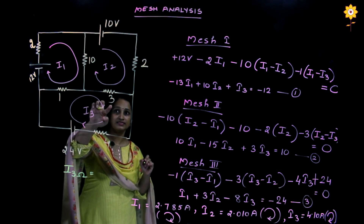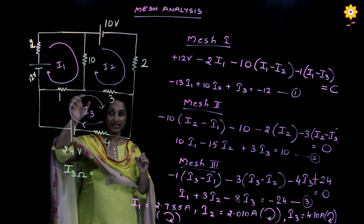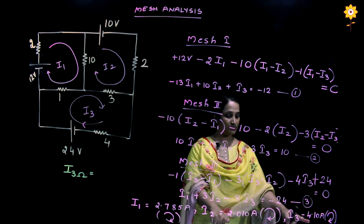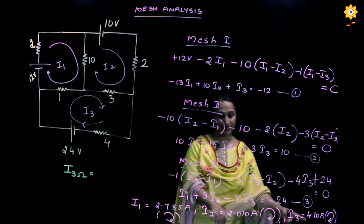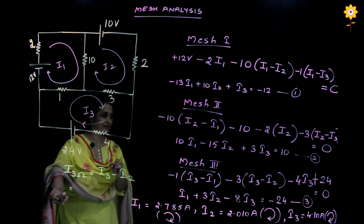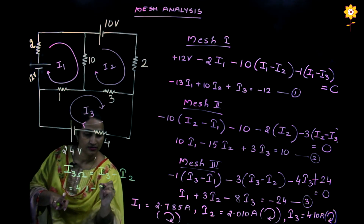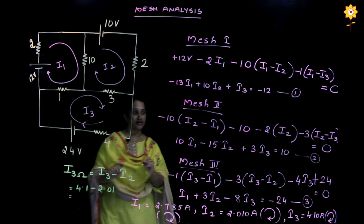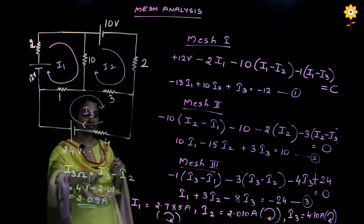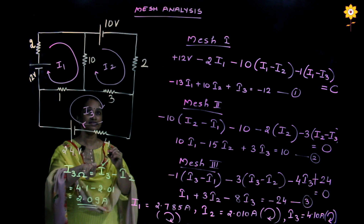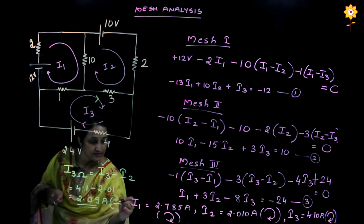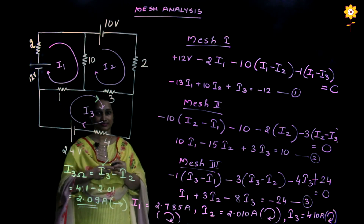The two currents flowing through the 3-ohm resistance are I2 and I3. You can write either I2 minus I3 or I3 minus I2. Since both values are positive and I3 minus I2 gives a positive result, we write I3 minus I2 = 4.1 minus 2.01 = 2.09 amperes. Since we wrote I3 minus I2, the direction of the current through the 3-ohm resistor follows the direction of I3 in the clockwise sense.